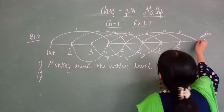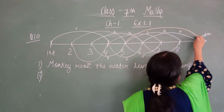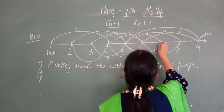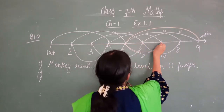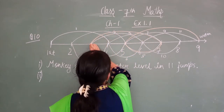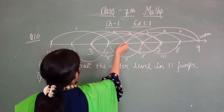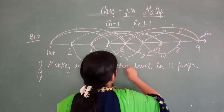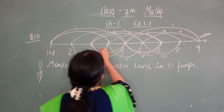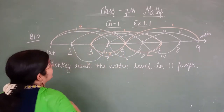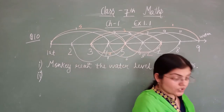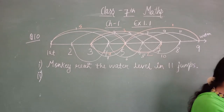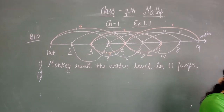So 4 steps up and then 2 steps down. Now again 4 steps: 1, 2, 3, 4 — means 4 steps. Again 2 steps down. Then 4 steps up here. So this is his first jump, this is his second, this is his third jump, this is his fourth, and this is his fifth jump. In total there are 5 jumps.